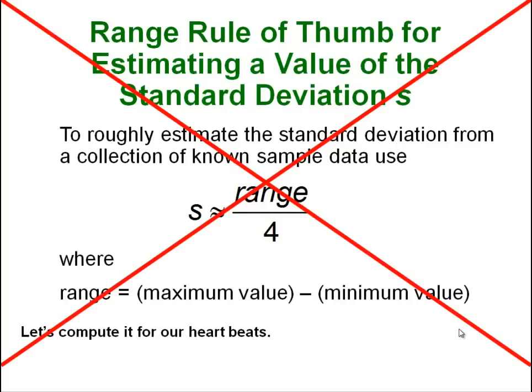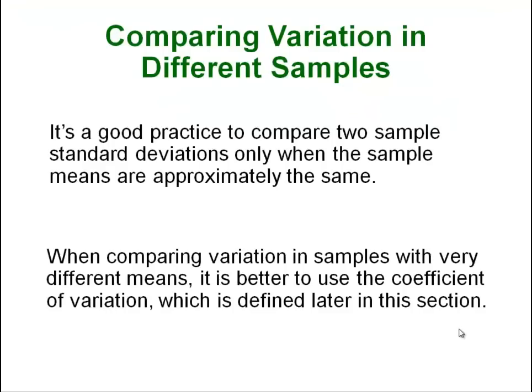Ignore this. Using the range and dividing by 4 to get you an estimate of the standard deviation is a horribly inaccurate thing to do, and since we have technology it's no longer necessary, so you can just skip that example.